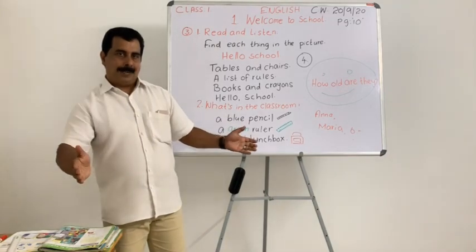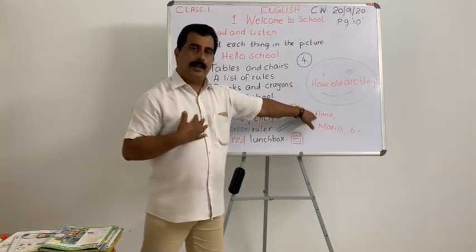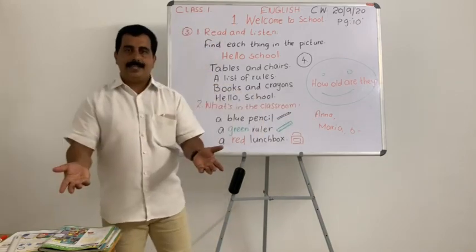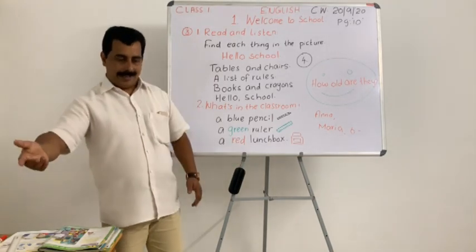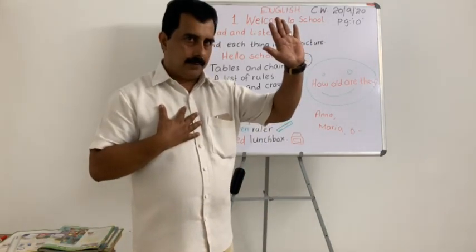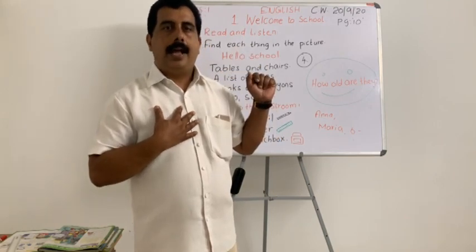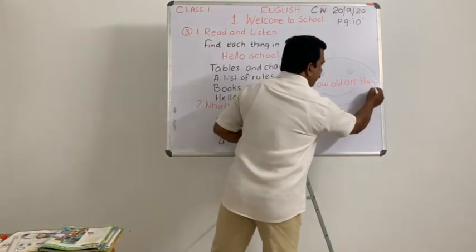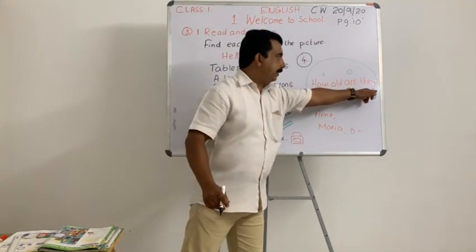Two friends are talking. What's the first girl's name? I'm Anna. The second girl is Maria. Anna asks Maria: how old are you? Some are saying five or eight — it's wrong. Maria is telling: I am six. There is a small space in your book — write your answer there: I am six.